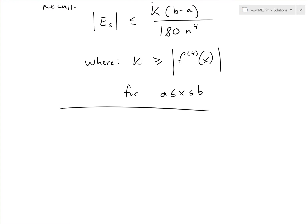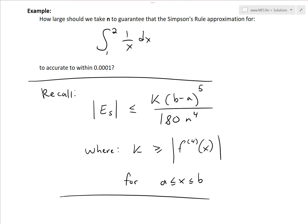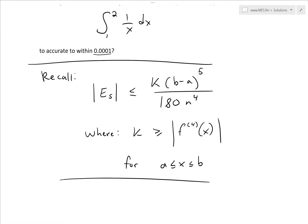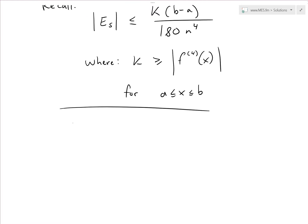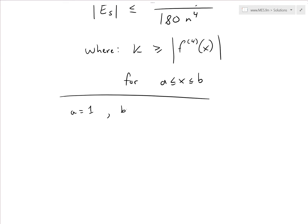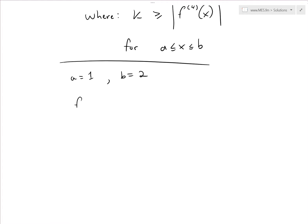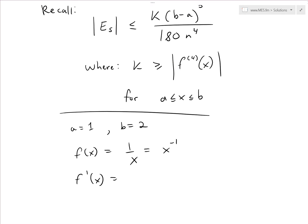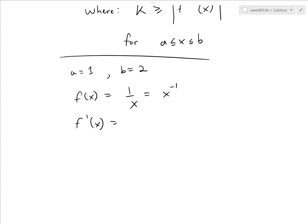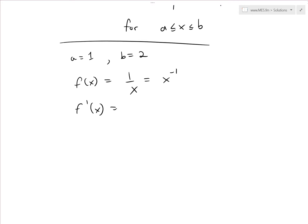We want the error to be less than 0.0001. In our case, a = 1 and b = 2 since we're integrating from 1 to 2, and our function is f(x) = 1/x, which can be written as x^(−1). We need to find the fourth derivative to determine a value for k.